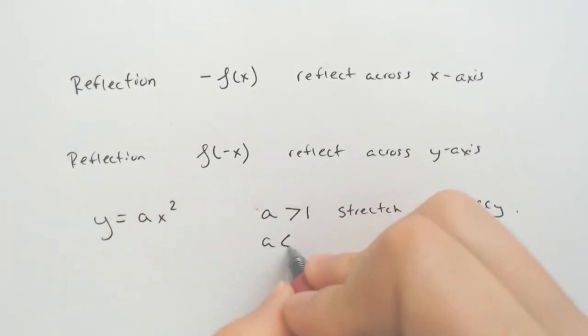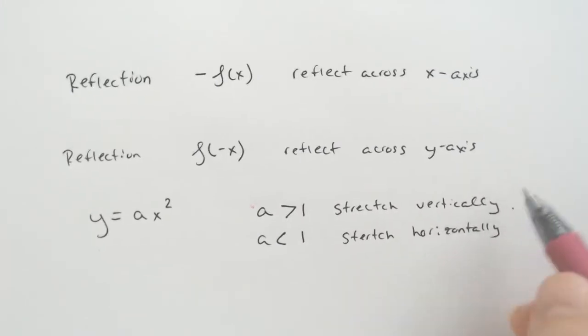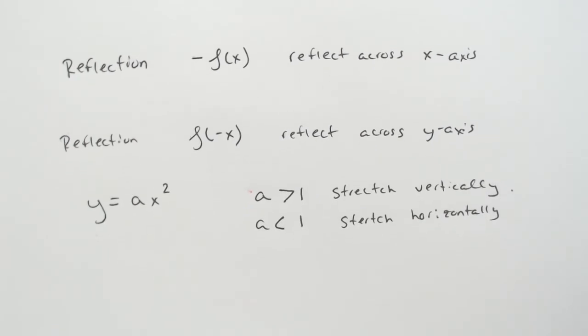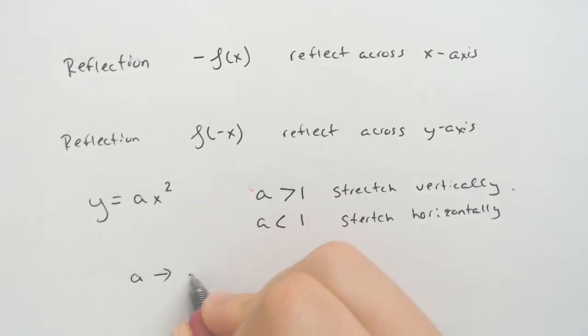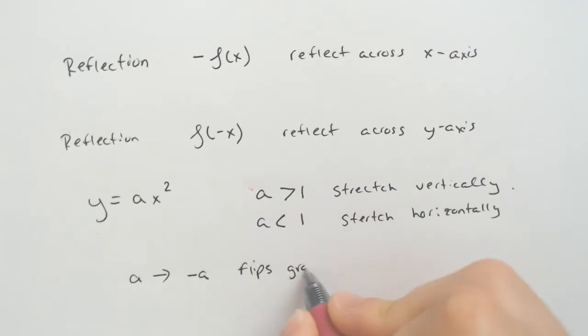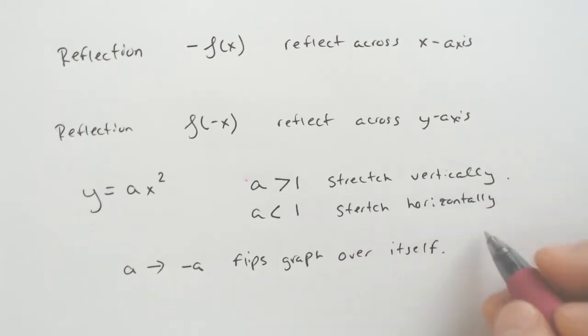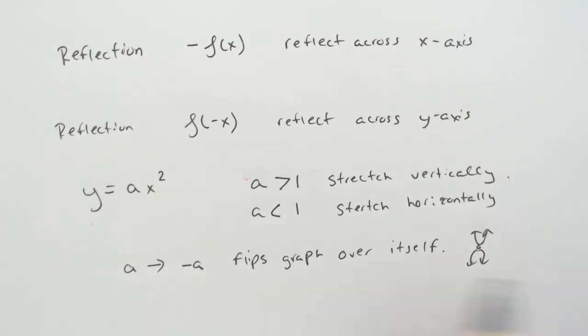If a happened to be less than one, it would stretch horizontally. I like to think of this as skinny and the horizontal as kind of fat. Now, if a and only a switches to being a negative a, that flips graph over itself. So if it was facing up, it would face down in the exact same location.